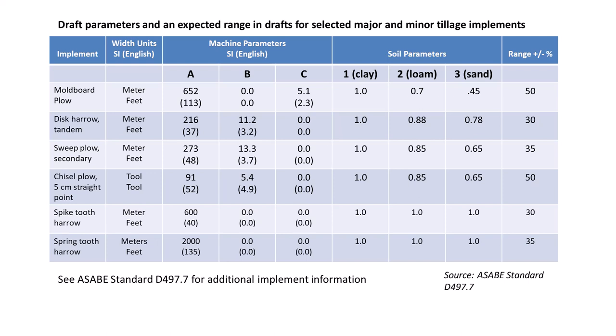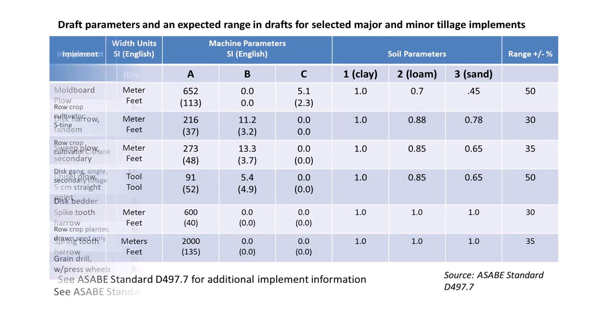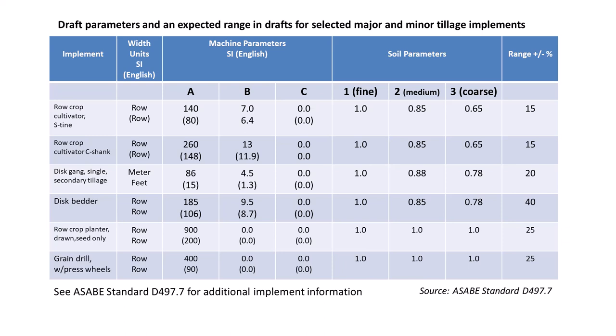Typical values of all parameters are listed along with an expected range of variation due to differences in machine design, machine adjustment, machine age, and site-specific conditions including soil moisture and residue cover. This range gives the expected average or typical draft variation as machine and soil conditions vary. Additional draft parameters for row crop planters, grain drills, row crop cultivators, and other tools are available in ASABE standard D497.7.